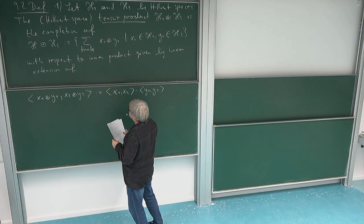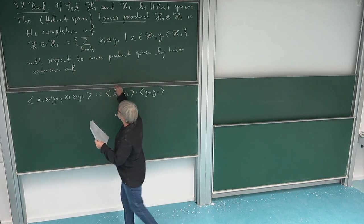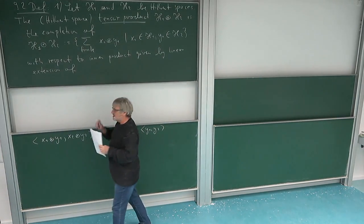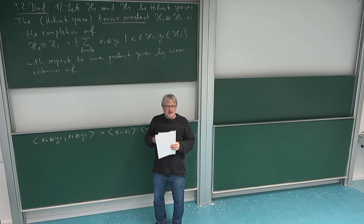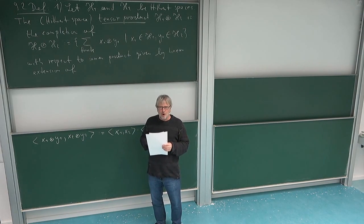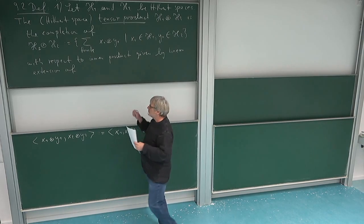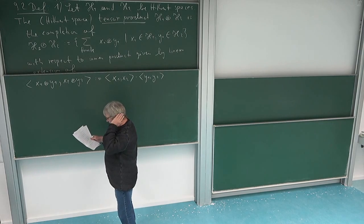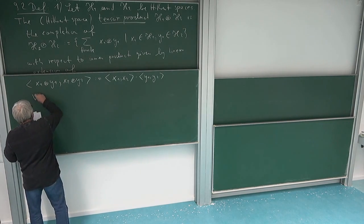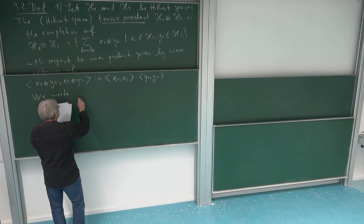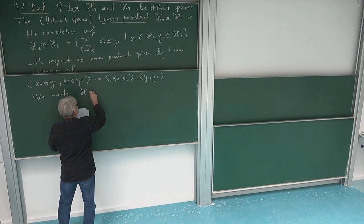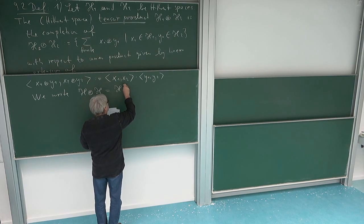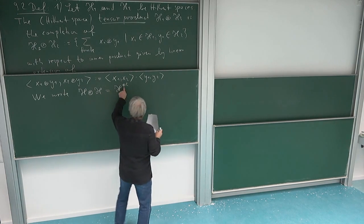And of course if H1 and H2 are both equal to one Hilbert space H, then I can also write this in a power form as H to the power 2 in a tensor sense. So if H1 and H2 are the same, equal to H, then I also write this as H^⊗2.